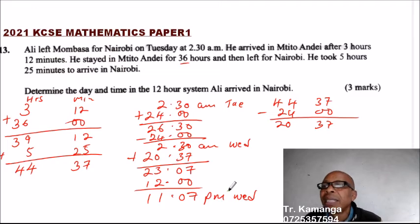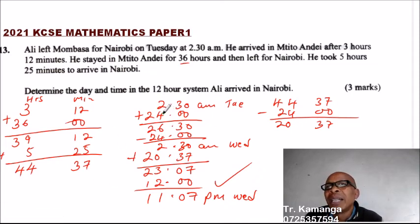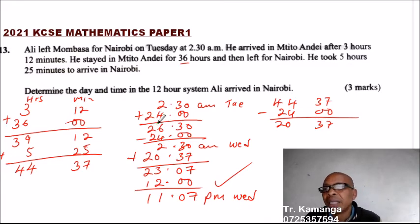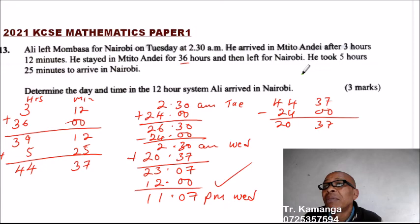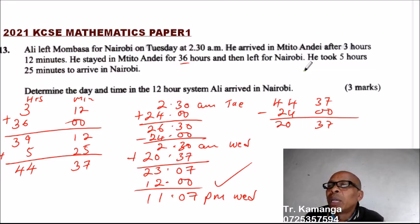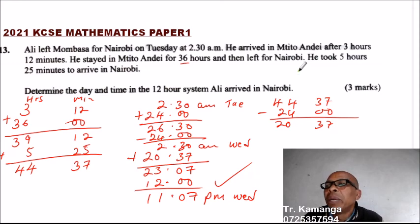So Ari arrived in Nairobi on Wednesday at 11:07 PM. This question tests whether you understand the 24-hour system, the 12-hour system, and how to convert between them. In the 12-hour system, we count 12 hours of the day from midnight to noon, and another 12 hours from noon to midnight. In the 24-hour system, we count from one midnight to the next.